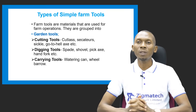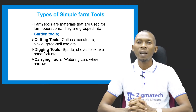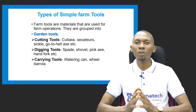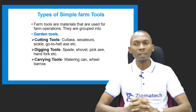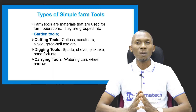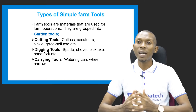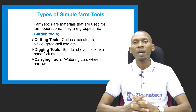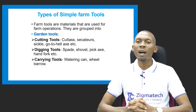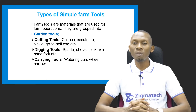The types of simple farm tools can be grouped into various categories. We have garden tools, which include cutting tools such as the cutlass, the secateur, the sickle, and the go-to-hell. We also have digging tools: the spade, the shovel, the pickaxe, the hand fork. And carrying tools used for carrying items on the farm, such as the watering can and the wheelbarrow.